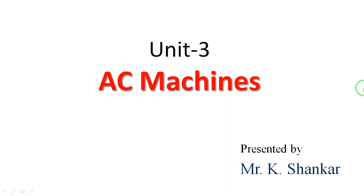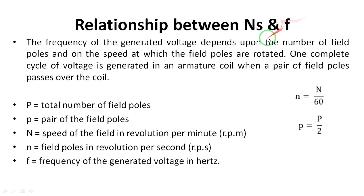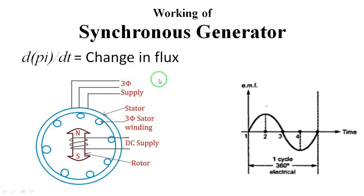Hello everyone, this is Shankar K. In this video you will learn about the relationship between synchronous speed and frequency of an alternator. The output of an alternator is electrical energy, which has both a magnitude of voltage and a frequency. We need to know which parameters the frequency depends upon, and all these points will be discussed in this video.